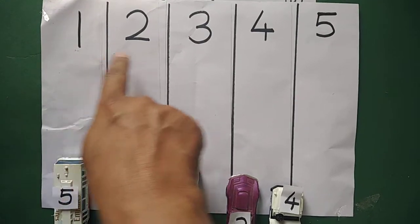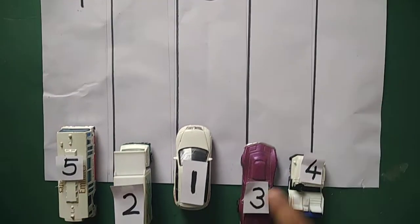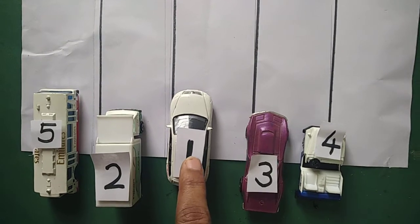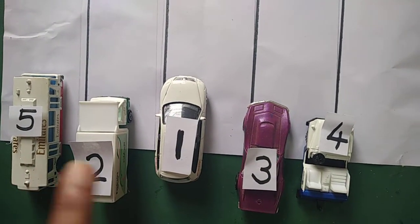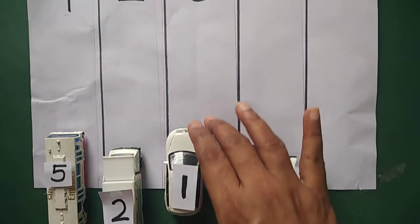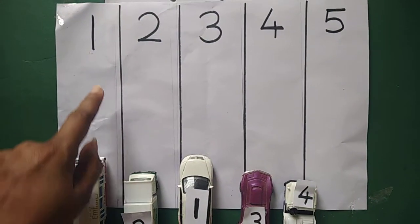Numbers are written 1, 2, 3, 4 and 5. And numbers are written on the vehicles also. On car, jeep, bus, truck. We have to park our vehicles according to the number.